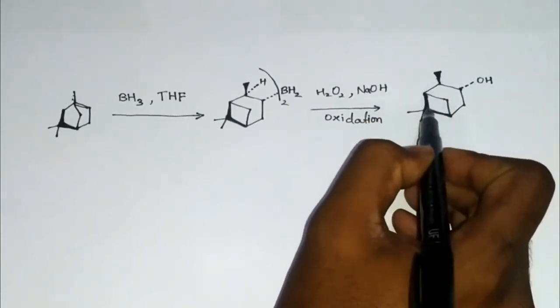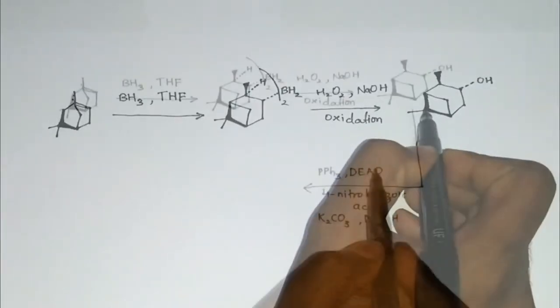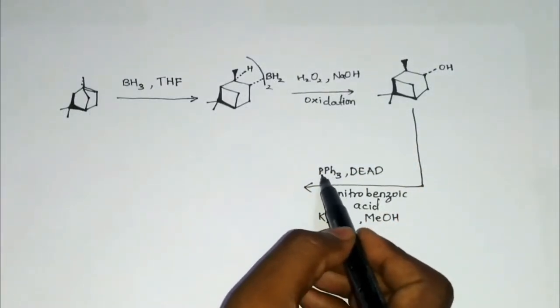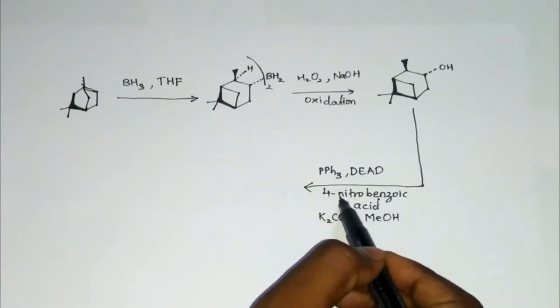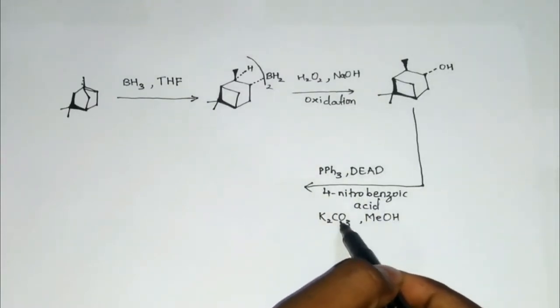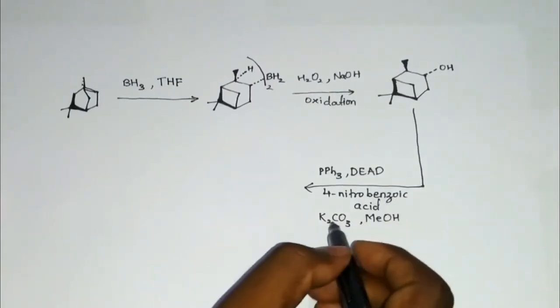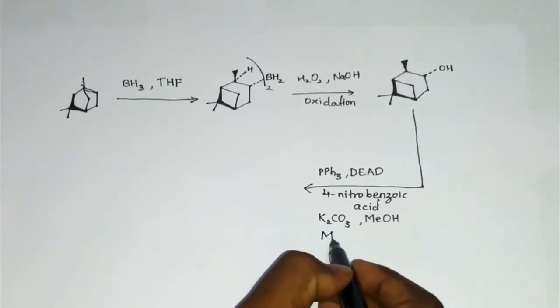The next set of reagent given is triphenyl phosphine DEAD 4-nitrobenzoic acid and so on, which shows us that this will undergo the Mitsunobu reaction.